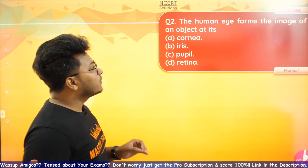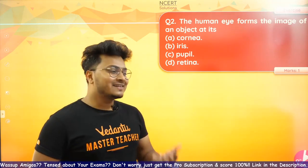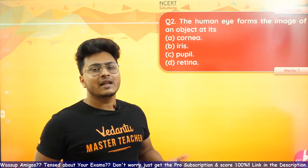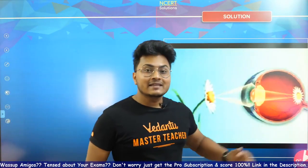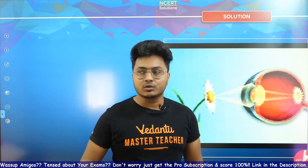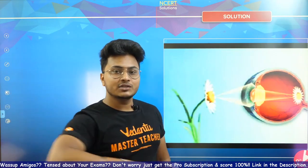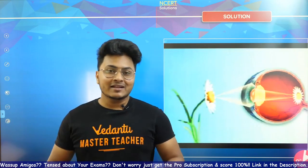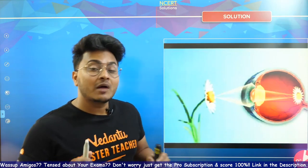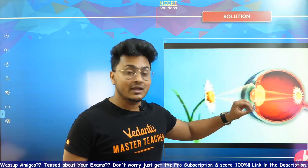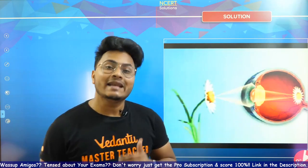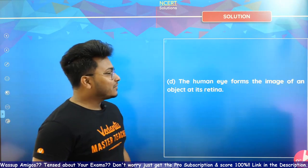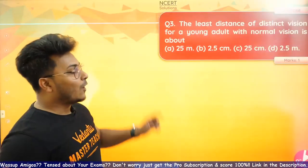Question number two: 'The human eye forms the image of an object at its — cornea, iris, pupil, or retina?' The answer is retina. The retina works like a screen in a theater — the projector is the lens inside our eye, which focuses light onto the retina, a natural screen where all the receptors and sensors are located. If the image is not formed on the retina, you cannot see things properly. So retina, option C, is the correct answer.